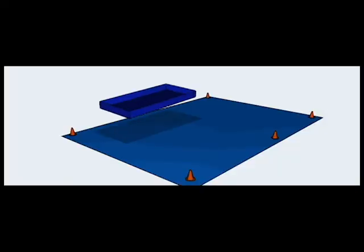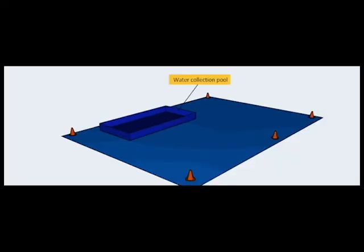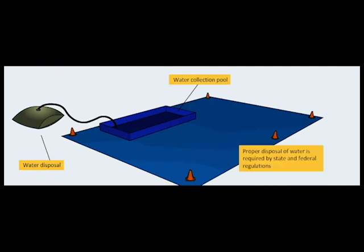The next task is to position a collection pool on the ground tarp toward the warm/dirty side. The collection pool retains the runoff from the showering process until it can be pumped into a wastewater collection container, such as a 55-gallon drum or flexible holding tank as necessary. State and federal regulations require recovery and proper disposal of wastewater generated by non-emergency decontamination operations. The facility should make reasonable attempts to collect the runoff even during emergency decontamination operations.